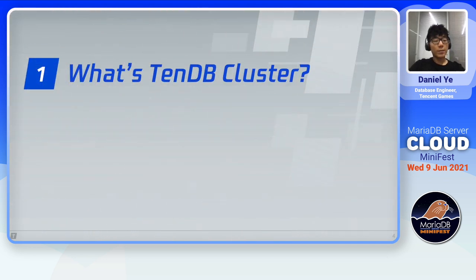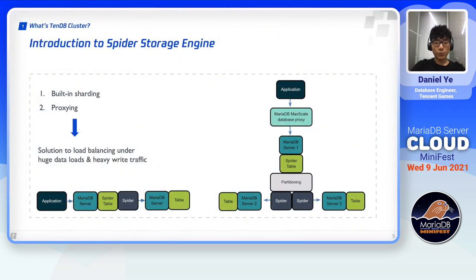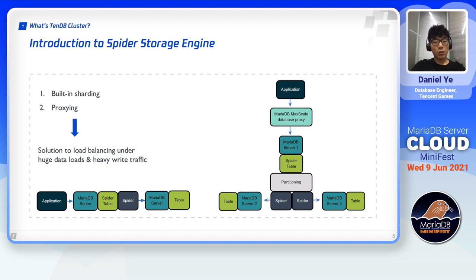So what's TenDB cluster? Before I introduce TenDB cluster to you, I want to first introduce Spider in MariaDB because it's the basis of our TenDB cluster's architecture. Spider is a database sharding and proxying solution. It's built into MariaDB as a pluggable storage engine, so it's also called the Spider storage engine. When we create a Spider table, Spider will create table links to one or multiple remote servers, also known as backend data nodes.